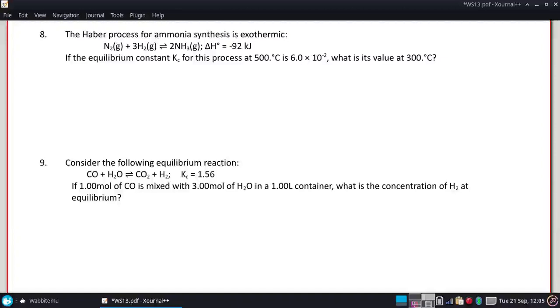Okay. The Haber process for ammonia synthesis is exothermic. If the equilibrium constant Kc for this process at 500°C is 6×10^-2, what is its value at 300°C?